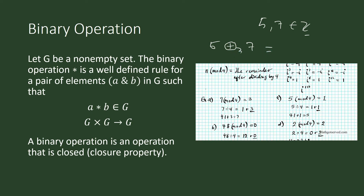What does addition modulo 3 do to five and seven? We obtain the sum of five and seven, divide it by three, and pay attention to the remainder. Five plus seven is twelve; divided by three is four with no remainder. Under this operation, we look for the remainder when we divide the sum by three, and the remainder is zero.